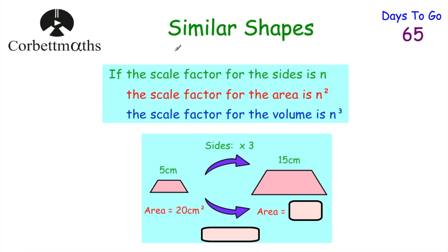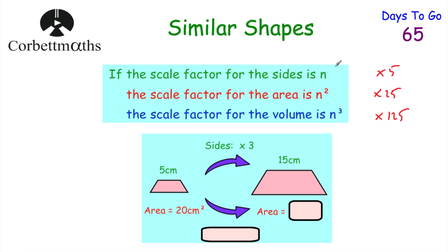Today we're looking at similar shapes. Here's part of the Maths Revision card — really important information: if you enlarge a shape by scale factor n, the scale factor for the area or surface area is n squared, and the scale factor for the volume is n cubed. For example, if the sides are 5 times bigger, the areas are 5 squared = 25 times bigger. For a cuboid with lengths 5 times bigger, the volume is 5 cubed = 125 times larger. Let's look at some questions to make sure we understand this.